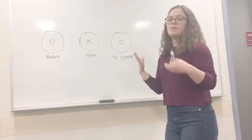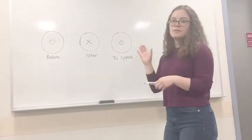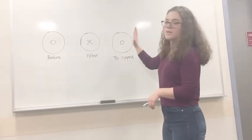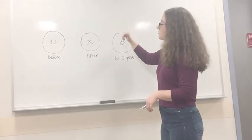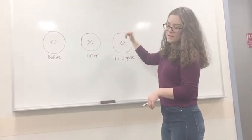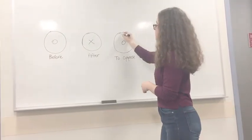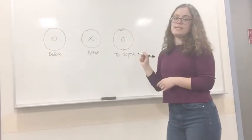Then again we can use our right hand rule to determine the direction of the current. So we have our thumb pointing out, current curls in the direction of the fingers, and so we get a counterclockwise current in this case.